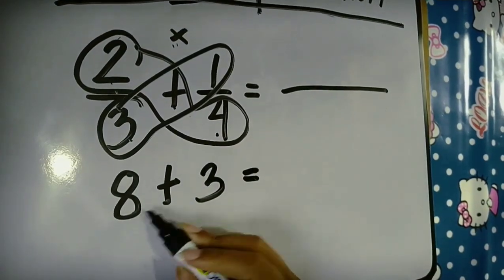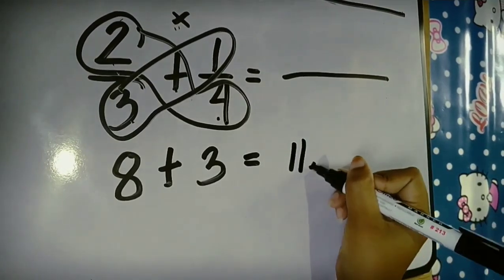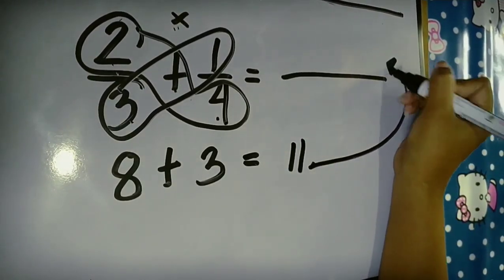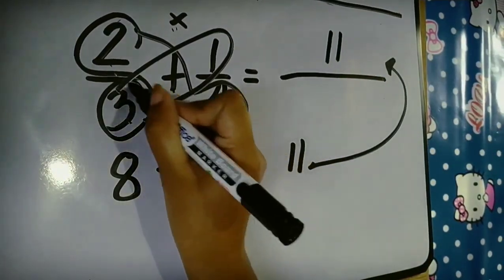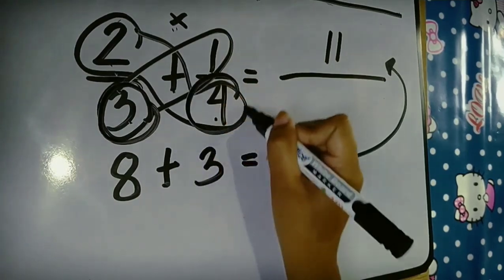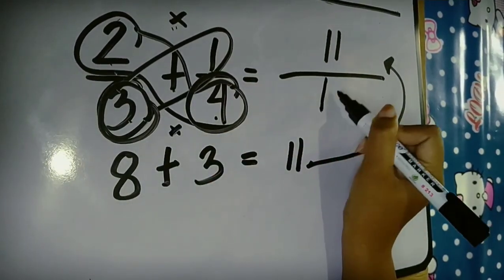8 plus 3, the answer is 11. 11 is for the numerator. For the denominator, we just multiply both denominators 3 and 4. 3 times 4, the answer is 12.